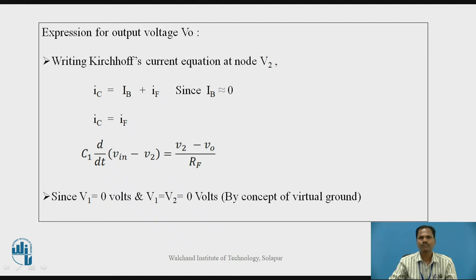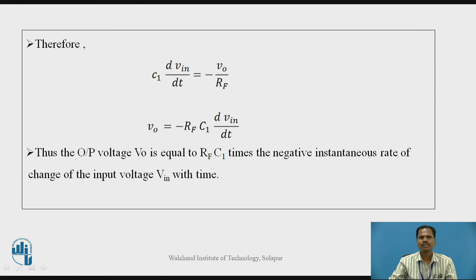Using the basic relation C = Q/V for a capacitor, the current through capacitor C1 is C1 times the derivative of (Vin minus V2) with respect to time, which equals (V2 minus V0) upon RF. Since V1 = V2 = 0 volts by the concept of virtual ground, we can write C1 times d(Vin)/dt = -V0/RF. Therefore, the output voltage equation is V0 = -RF·C1·d(Vin)/dt. Thus, V0 equals RF·C1 times the negative instantaneous rate of change of input voltage Vin with time.